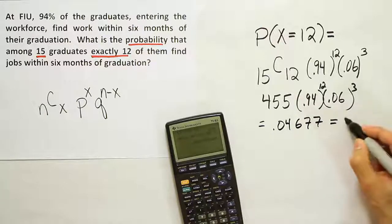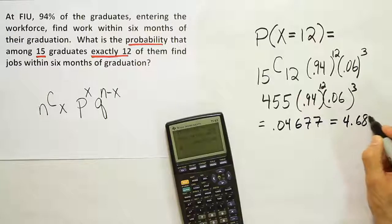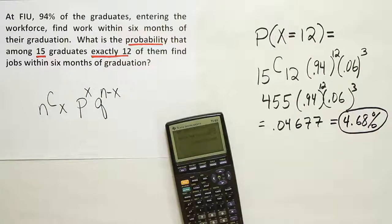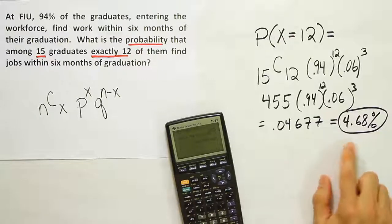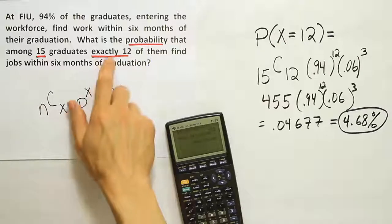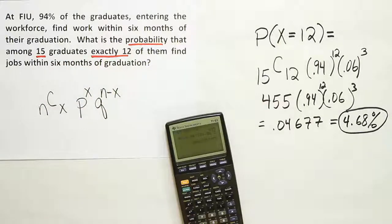So as a percent, that's 4.68%. So about a 5% or a 4.68% chance that exactly 12 of the graduates will find jobs within six months of graduation.